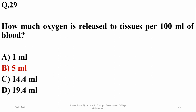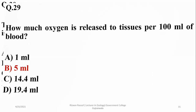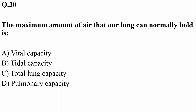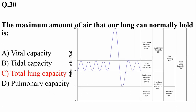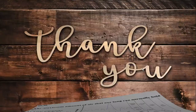Question twenty-seven: the maximum amount of air our lungs can normally hold is 5 to 6 liters, known as total lung capacity — the total amount of air held by the lungs when fully inflated, so Charlie is the correct option. That was all about human respiratory system MCQs. Thank you so much for listening.